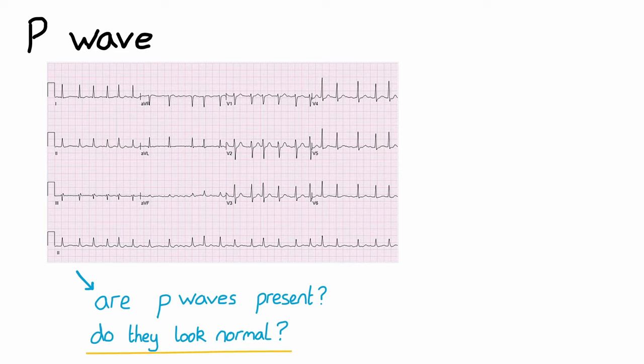So to recap our ECG interpretation, we start by checking patient details and the calibration of the ECG. We then move on to rate, rhythm, and axis, followed by each ECG component in order. Thanks for watching and feel free to watch the third and final video in this ECG series to learn more about the common conditions you're going to come across on ECGs in medical school exams.